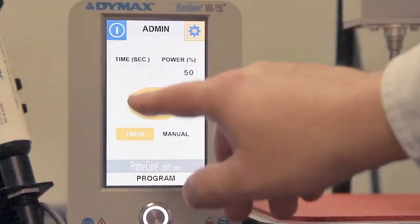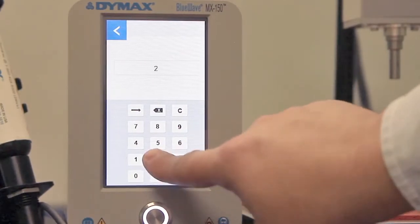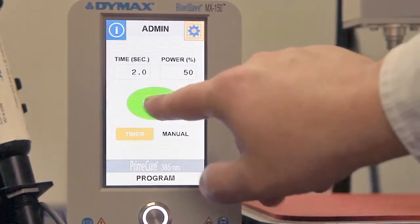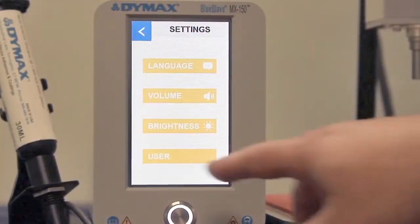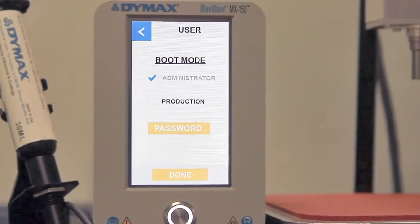The MX150 can be programmed for intensity and time and can be used manually or with a foot pedal. There are two user modes, admin and production.